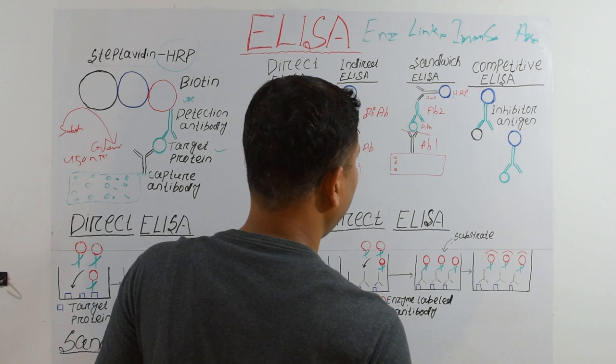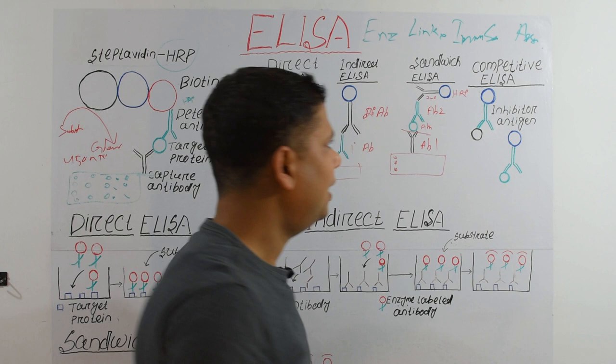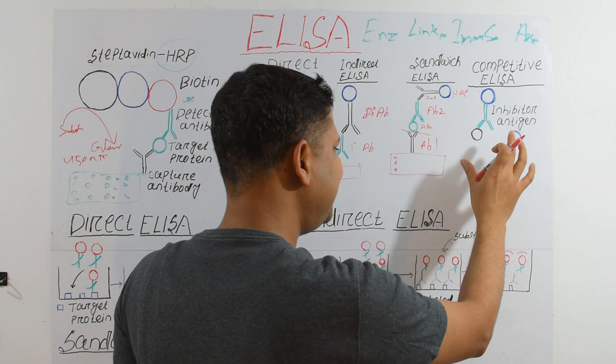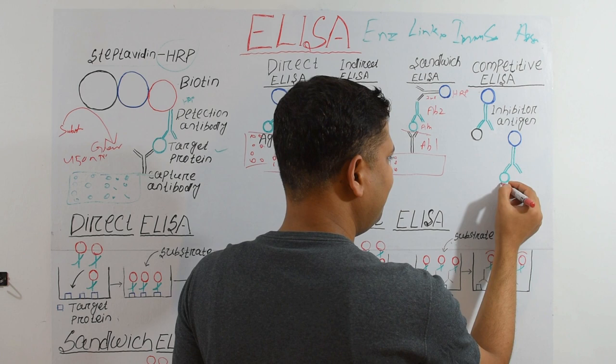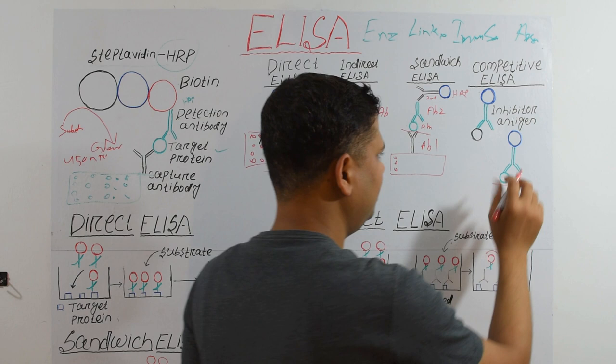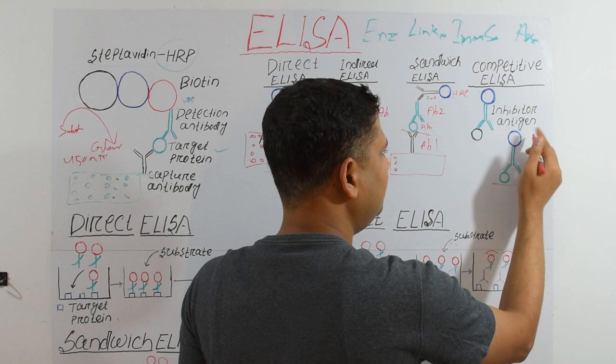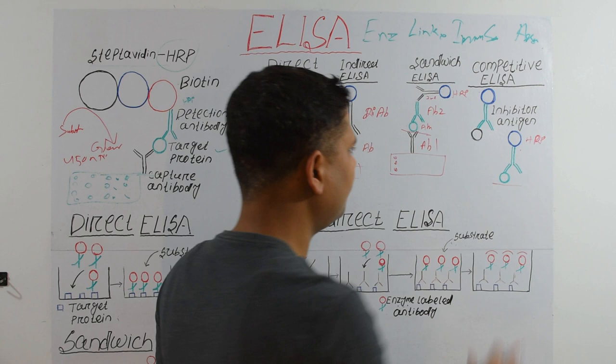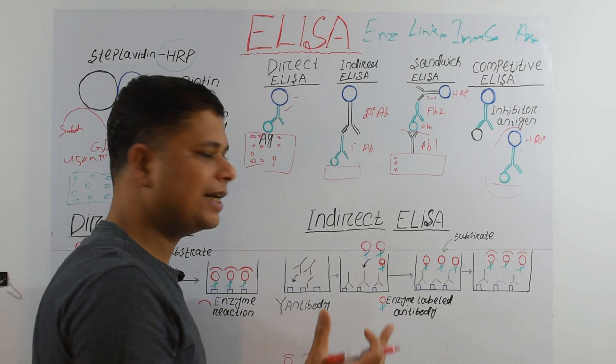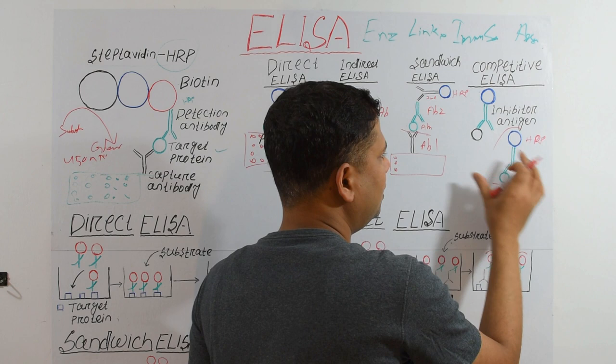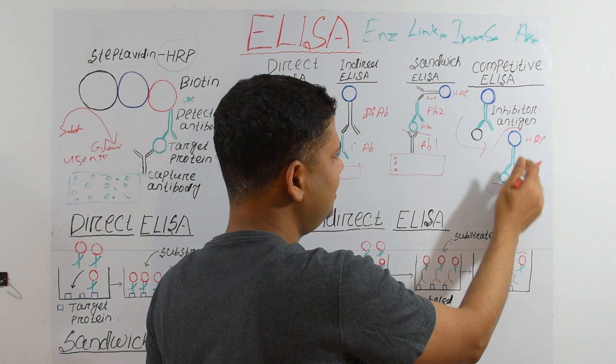In Competitive ELISA, we first tag our known antigen with a detecting antibody conjugated to HRP. If we then want to detect an unknown antigen or antibody in a sample, we add it competitively so that it replaces the pre-bound antigen.